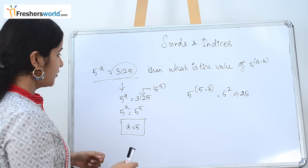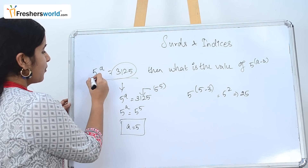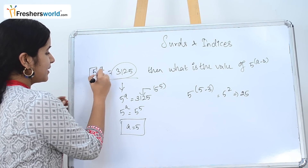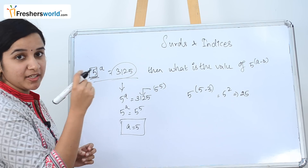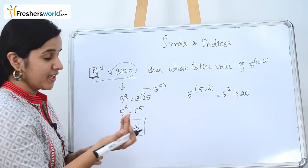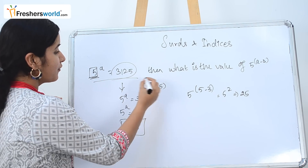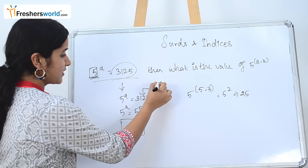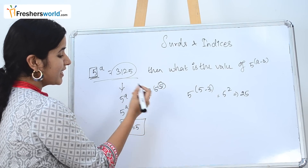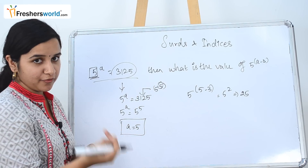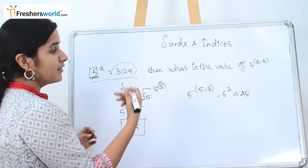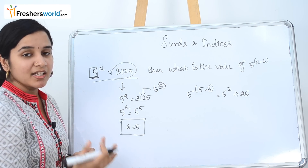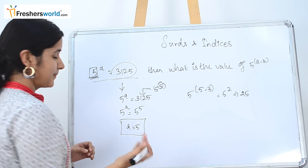It's a very simple sum. Generally in these kinds of sums, this number will be the base and the power will be varied. If you can find the power in which it has fallen, you can easily find the value of a, and then finding the value of the second part of the question will be easy. Let's go to the next sum.